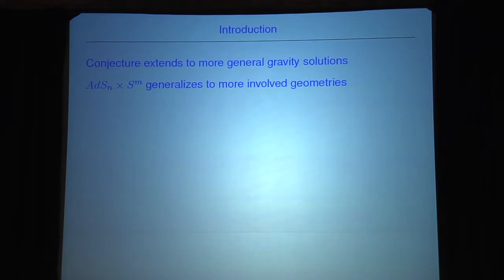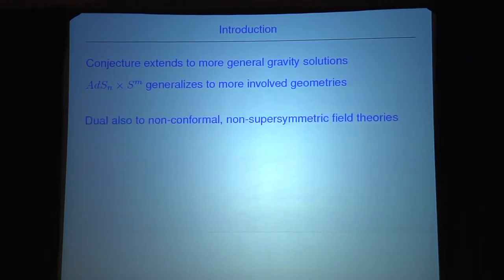To apply this idea to more general situations, the conjecture has been extended to more general gravity solutions. In particular, the original AdS_n × S^m geometry was generalized to more involved geometries, so we can also consider examples where we have dualities to non-conformal and also non-supersymmetric quantum field theories.